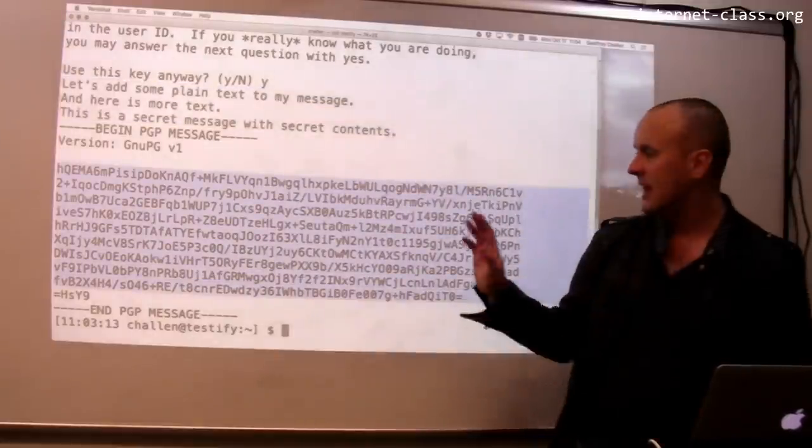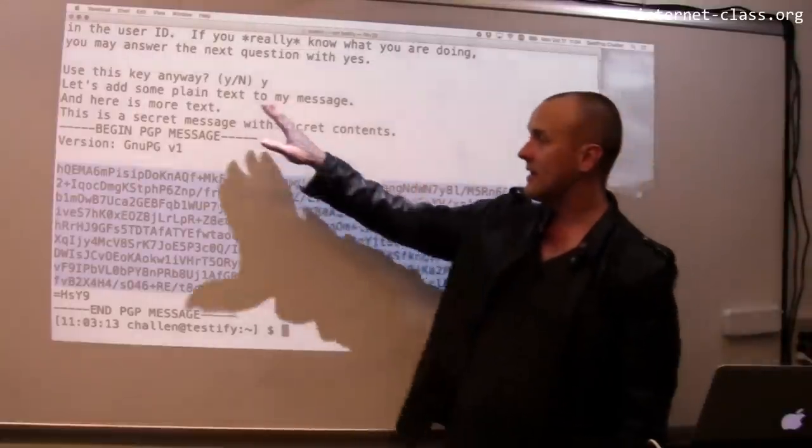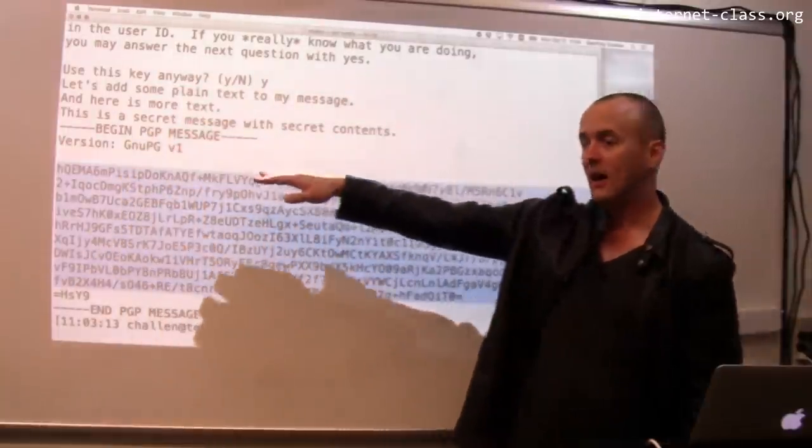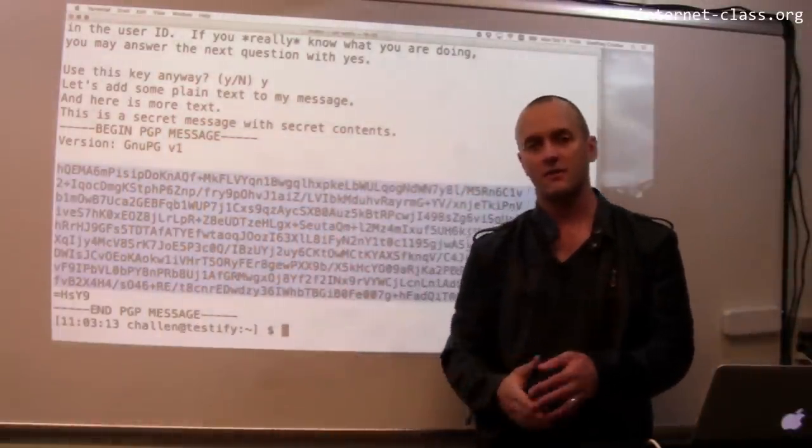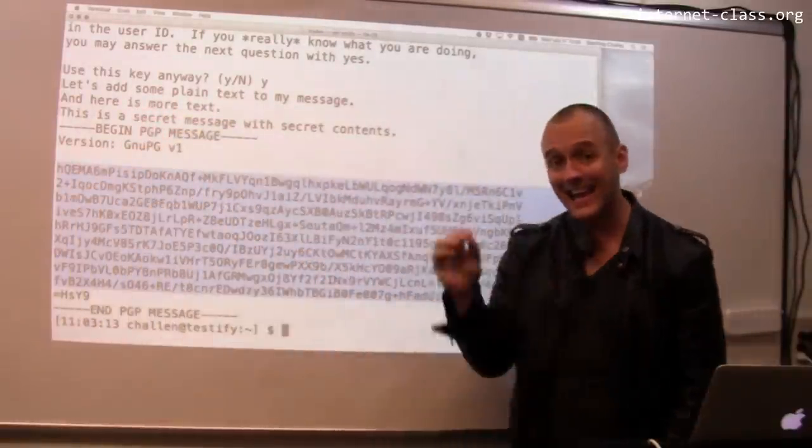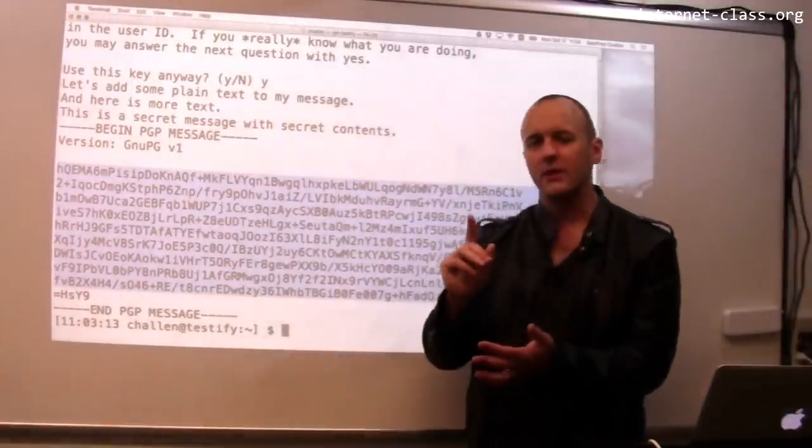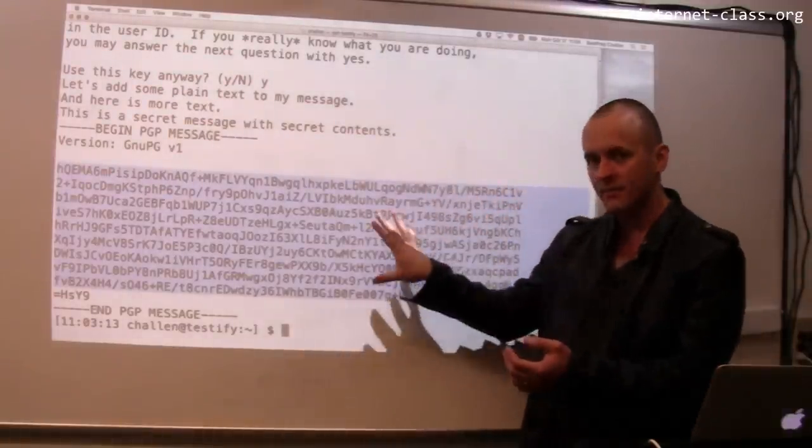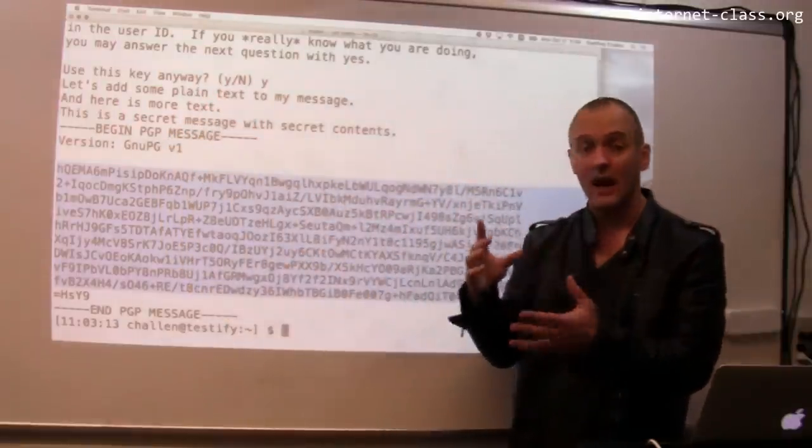Down here is the PGP message or the ciphertext. So this is the message after it's been encrypted using Adrian's key. And you can see that this message makes sense. This message is completely unintelligible. So if somebody on the internet saw this, they wouldn't know that the plaintext message was as follows. And if I'm using this encryption protocol properly,